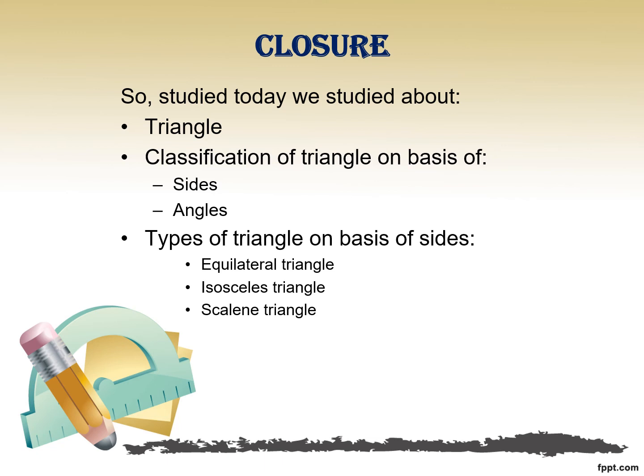For the equilateral triangle, all sides are of equal length and all angles are equal to each other. For the isosceles triangle, two sides are of equal length and two angles are of equal measure — the corresponding angles of the equal sides are equal. The scalene triangle has three sides of different length and three angles of different measures.